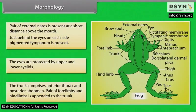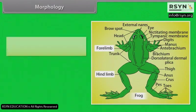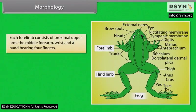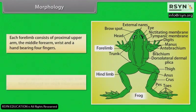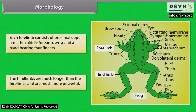The eyes are protected by upper and lower eyelids. The trunk comprises the anterior thorax and posterior abdomen. A pair of forelimbs and hindlimbs is appended to the trunk. Each forelimb consists of the proximal upper arm, middle forearm, wrist and a hand bearing four fingers. The hindlimbs are much longer than the forelimbs and are much more powerful.